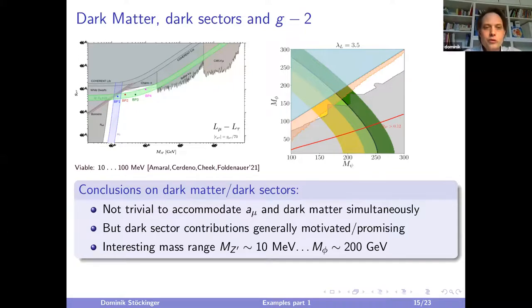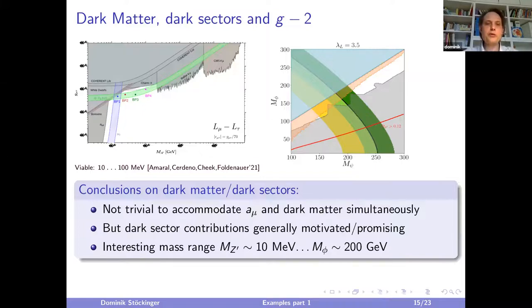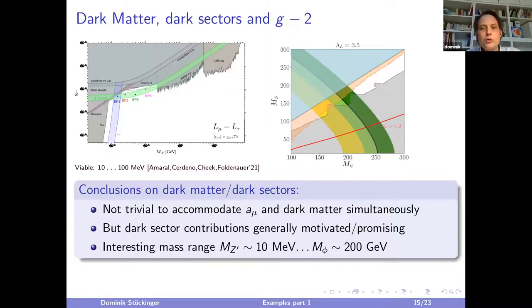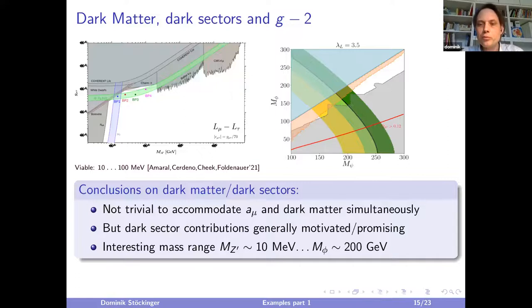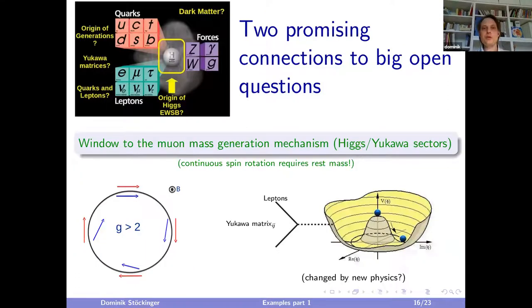Summary on dark sector models: it's not trivial to accommodate g-2 and dark matter simultaneously, but dark sector models — such as Z' with L_μ−L_τ at 10 MeV scale, or models with two new particles at 100–200 GeV — are plausible, theoretically motivated, and can explain g-2. The relevant mass range spans from 10 MeV for the Z' up to about 200 GeV for these two-new-particle models.